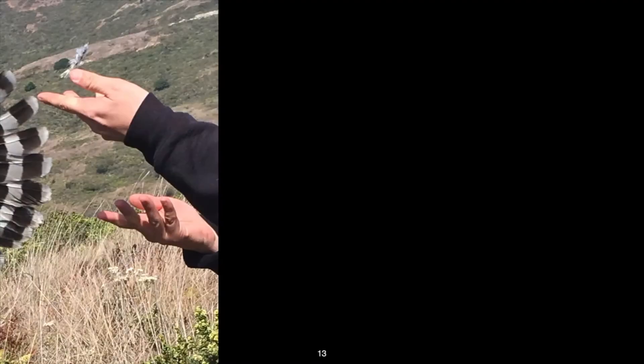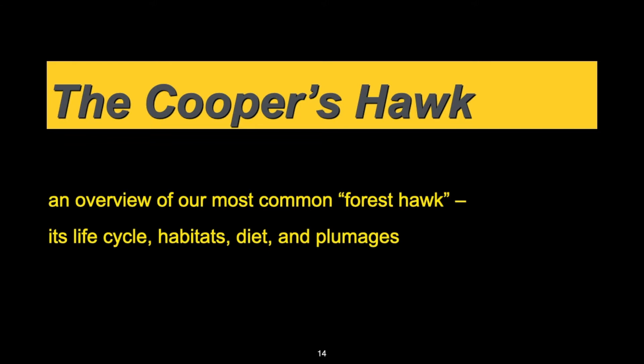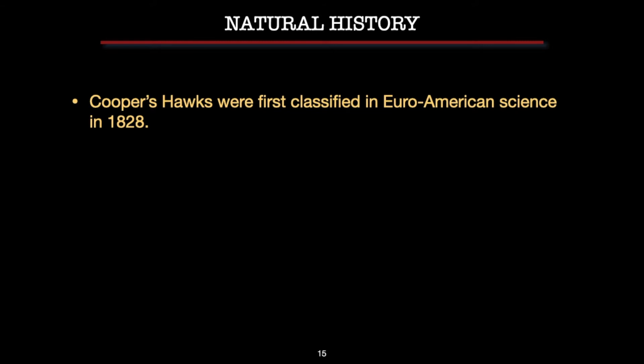Our forest hawk, the Cooper's Hawk, is becoming increasingly common. Cooper's Hawks were first classified in the early 1800s by Euro-American explorers. They were named by a French naturalist named Charles Bonaparte, who named the bird after William Cooper, a fellow naturalist who collected early specimens by going out with a firearm and shooting birds of each species to study their plumage and body forms and then present the specimens to museums.